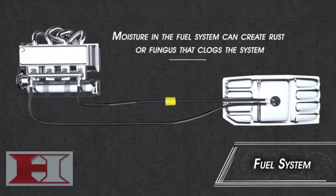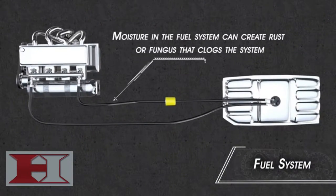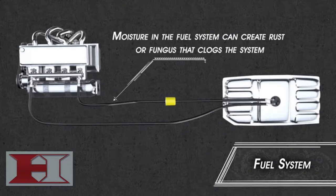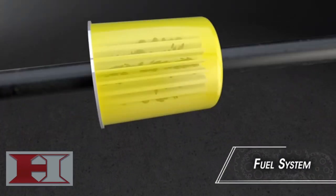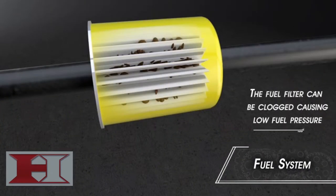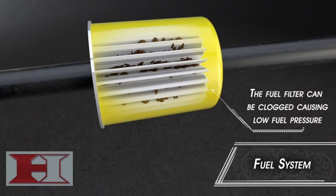Fungus can form from excessive moisture, as well as rust on metal fuel system components. The fungus and rust can clog the fuel system, particularly at the fuel filter, which causes a restriction resulting in low fuel pressure, and your engine will run poorly.